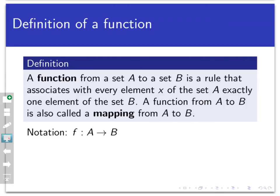First, the three items that have to be in place are here: the set that holds the inputs, the set that holds the outputs, and the rule or process. The two important properties are also here: every valid input has an output, because the definition says the rule associates with every element x of the set A an element of set B. And splitting of inputs doesn't occur, because it says the rule associates with every element x of set A exactly one element in set B — so there's exactly one output for every valid input.